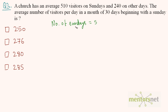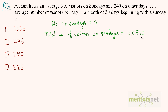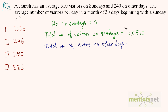In a normal month the total number of Sundays are 4, but this month is beginning with a Sunday, so the number of Sundays are 5. We have 510 visitors each Sunday, so the total number of visitors on Sundays is equal to 5 times 510. Out of 30 days, 5 are Sundays, so the other days are 25. So, 25 times 240 gives the total visitors on other days.